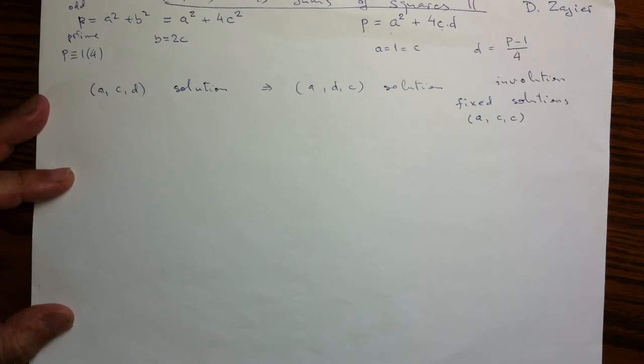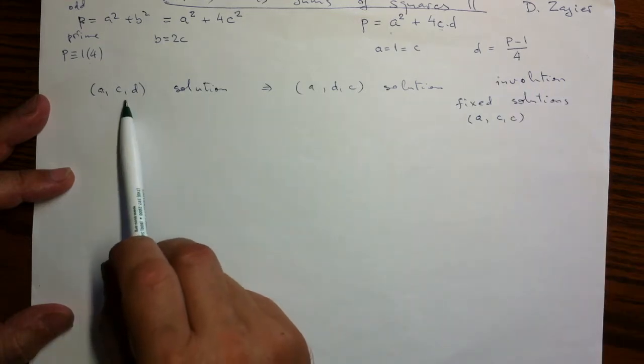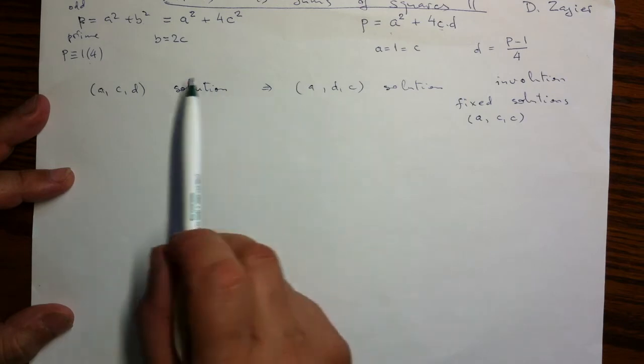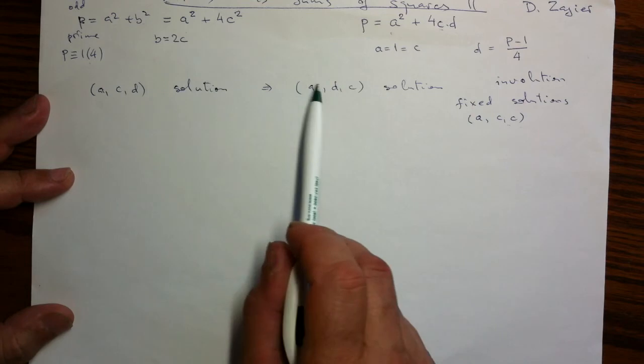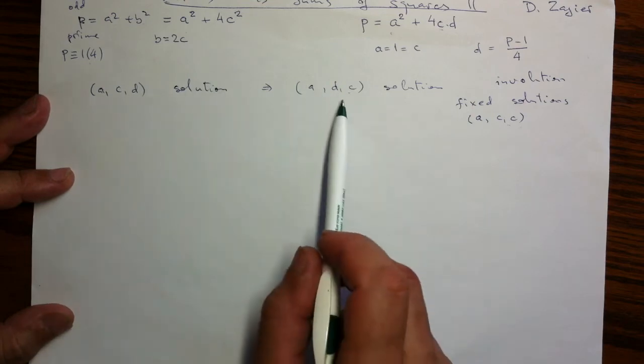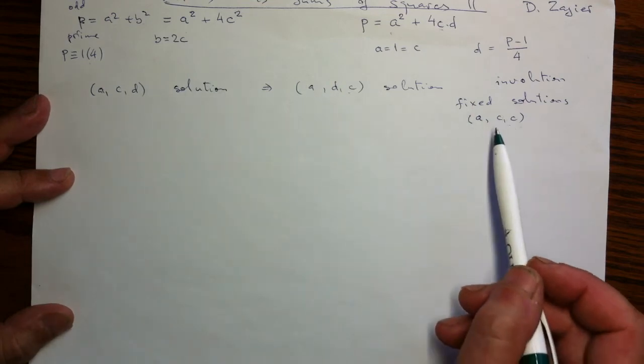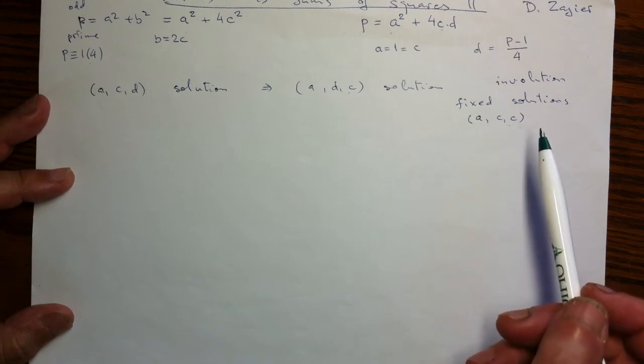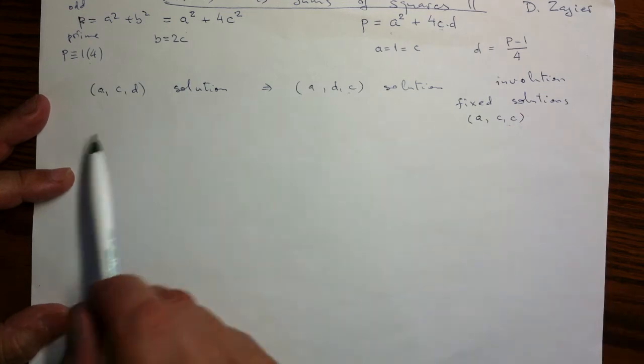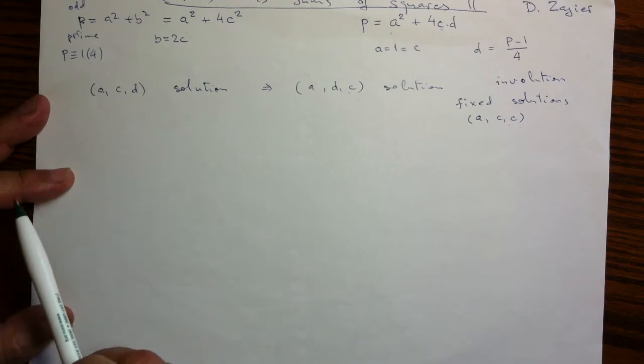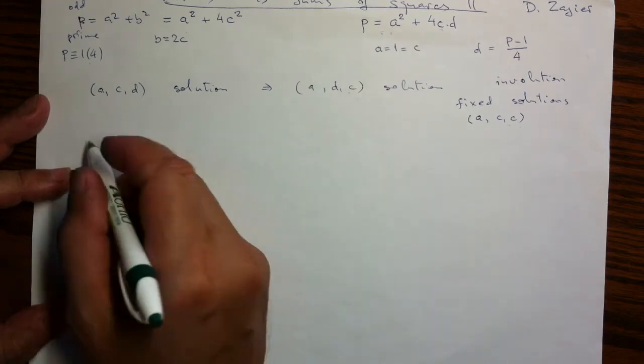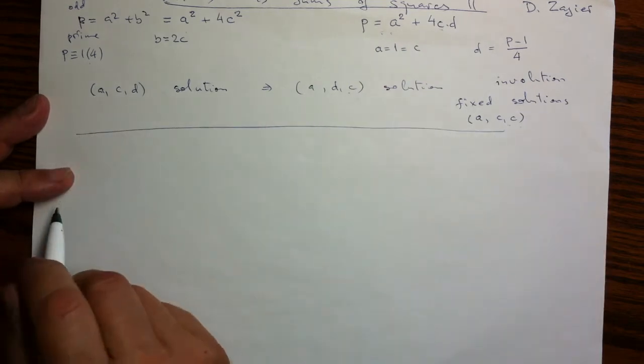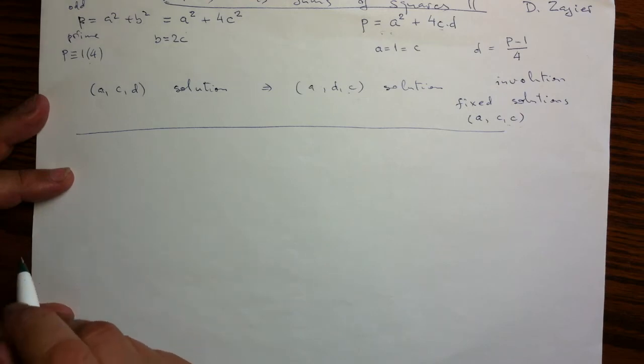We want to have at least one, so we want to know that there is one. But this involution groups things in pairs. Well, in general, if they are not solutions of the original equation, then they will be changed and we'll have a pair of solutions. And then if we want to have it, it's enough to just know that not everything is paired up, so there will be at least one left. So if the number of solutions of this equation is odd, we are done.